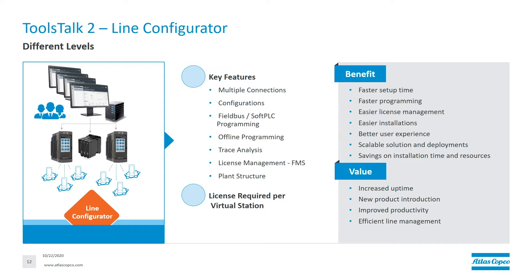Next is Line Configurator, which is similar to Station Setup where you could do everything — configurations, soft PLC, and field bus mapping. The additional functionality is a plant structure, meaning every controller is connected to your server and you could jump between controllers and copy-paste programs. You could also manage your licenses through FMS: if you want to rebalance your line — for example, Controller A has six tools and Controller B has one — you could move those tool licenses from A to B. This is licensed per virtual station, so if your plant has six tools connected to the server, you need six licenses of ToolsTalk 2 Line Configurator, with an unlimited number of users.